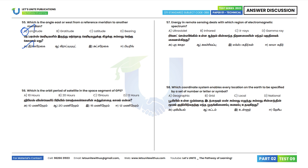Question 56: Which is the orbit period of a satellite in the space segment of GPS? The answer is 12 hours. Option B. Question 57: Energy in remote sensing deals with which region of the electromagnetic spectrum? The answer is the infrared region. Option B.